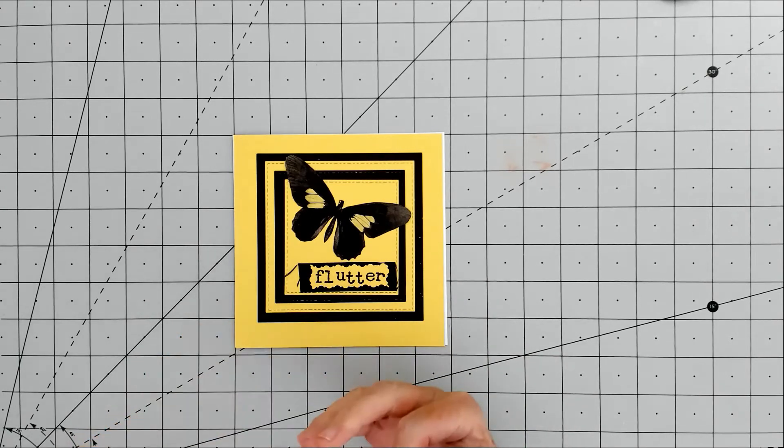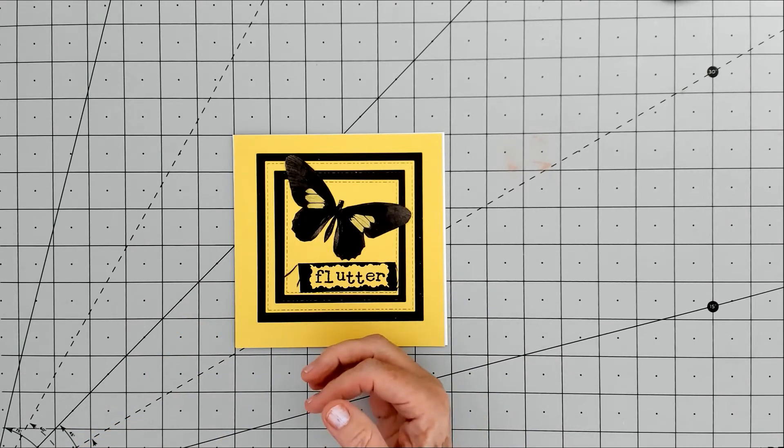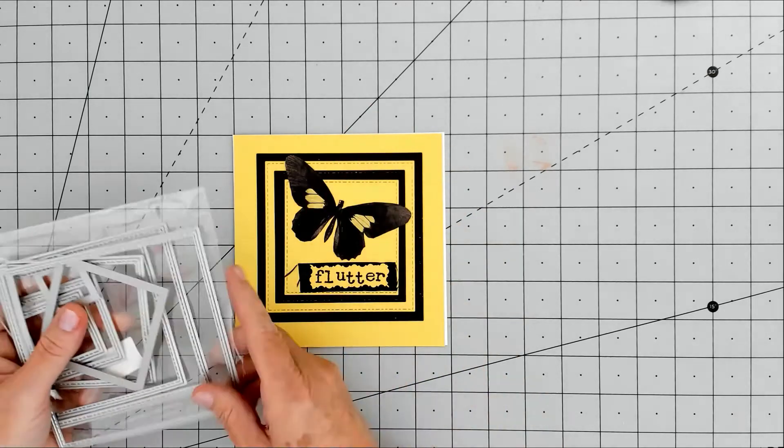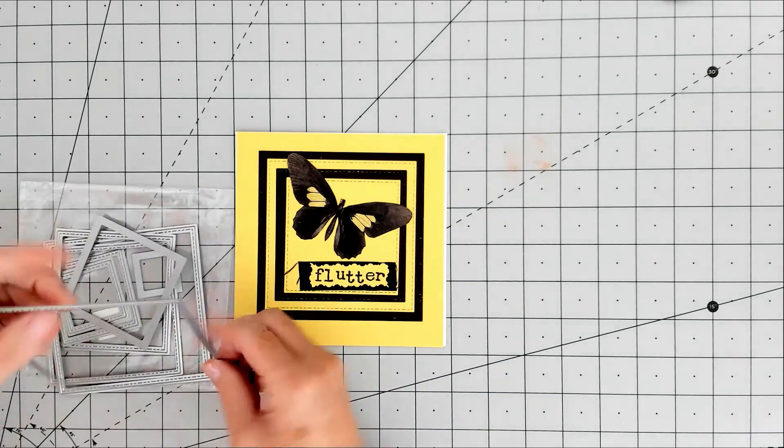This is a six by six, and I used yellow card and black card. I also used to cut out the squares with the ribbon, the stitching round, I used this die cut set.